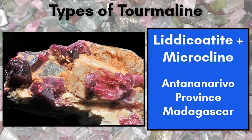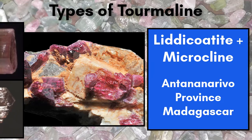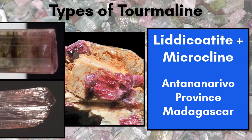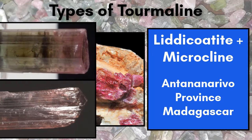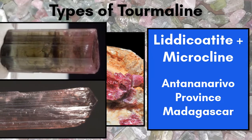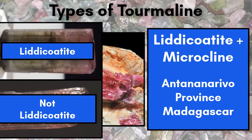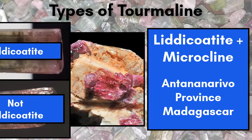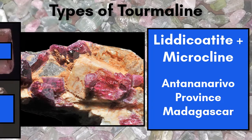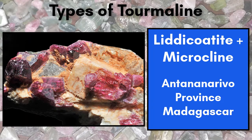Liddicoatite is the calcium analog of elbaite. It is also rarer and prized among collectors, and is often extremely colorful as well. Chemical analysis is required to tell it apart from elbaite. It is named for Richard T. Liddicoat, the father of modern gemology.